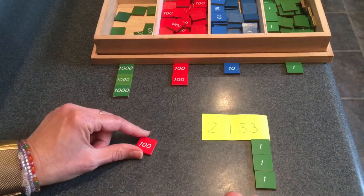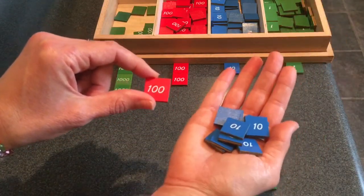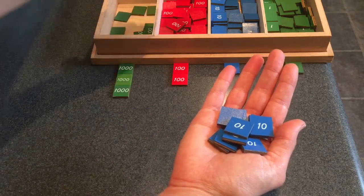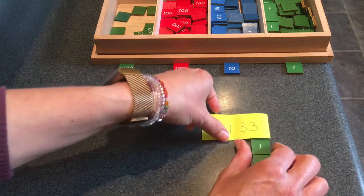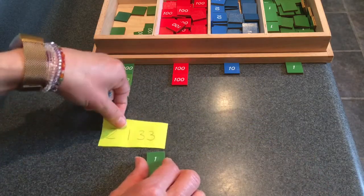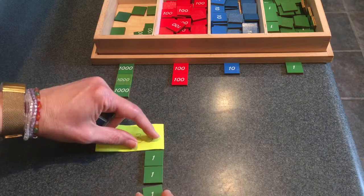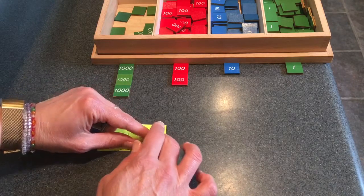I'll put this hundred back because I'm exchanging. Ten tens equal one hundred. So I'll put that one back. I think I need to scoot this over a little bit so that I have room, don't I? I need to have room to build my tens.